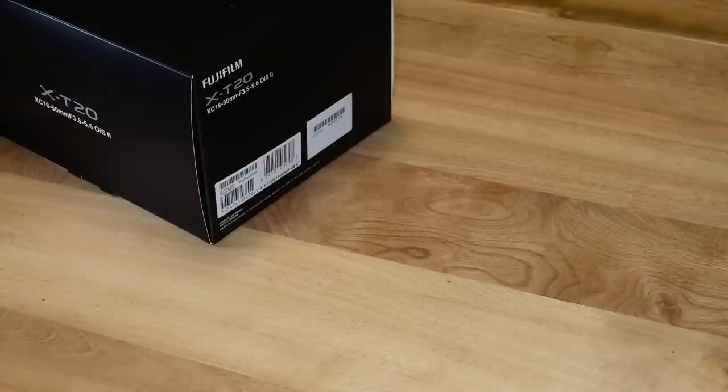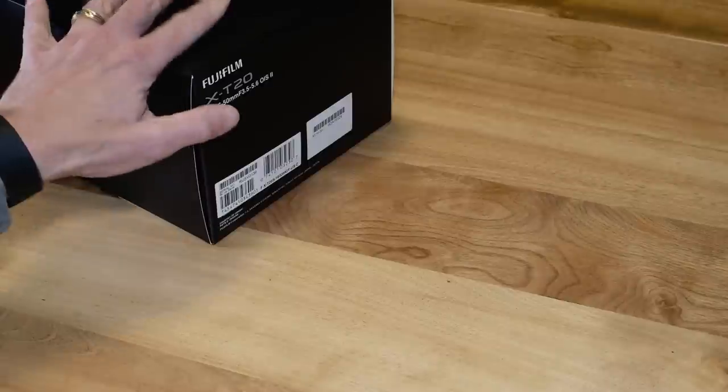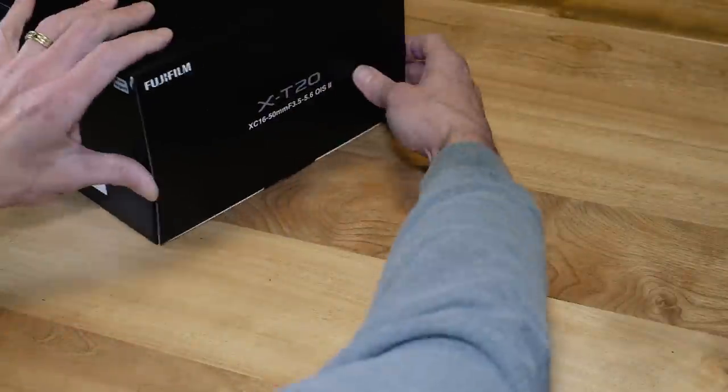The X-T20 can be purchased a few different ways. First there's two color options, either an all-black version or black with silver accents. You can also purchase it body only or with the XF 18-55 f2.8 to f4 premium kit lens or with the standard XC 16-50 3.5 to 5.6 lens. That's what this box is. Let's open it up.